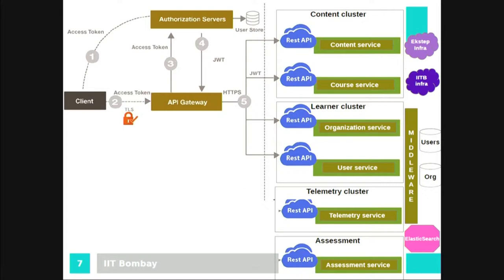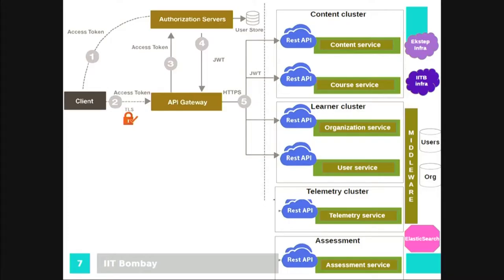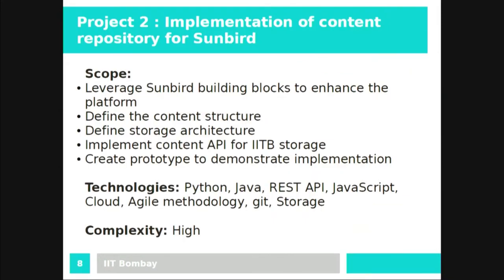Behind the architecture, there are two clouds of interest. The X-Step Infra is where their content is being stored right now, and the IITB Infra is where we would like to store that content — a local storage solution at IIT Bombay. So, building the middleware that will store data onto that platform, and building the REST APIs to store data on the cloud storage solution — that's what the second project is all about.